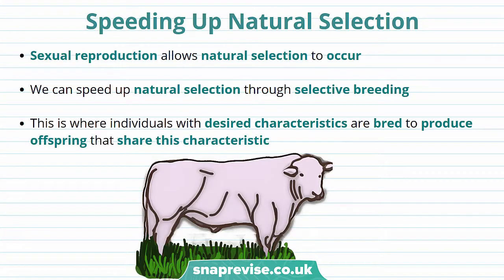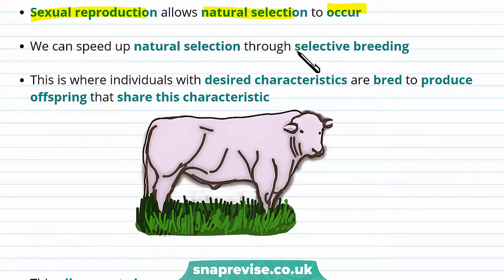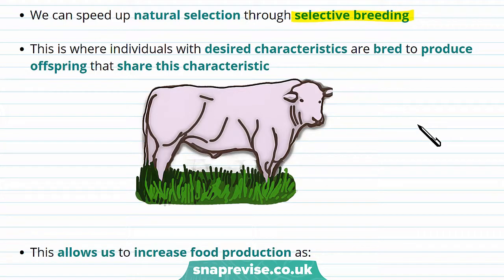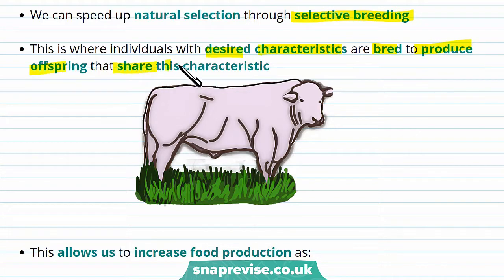Natural selection leads to evolution. Natural selection is when organisms become adapted to their environment. Sexual reproduction allows natural selection to occur, and we can speed this process up through selective breeding. Selective breeding is when organisms or individuals with desired characteristics, like high milk yield, are bred to produce offspring that share this characteristic.